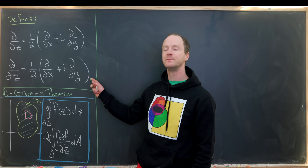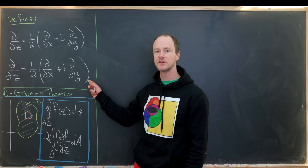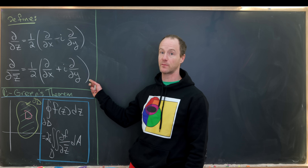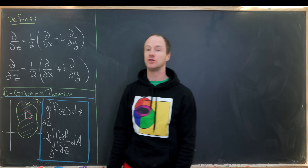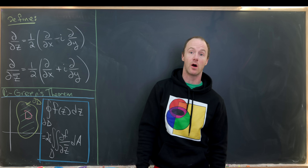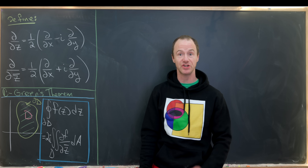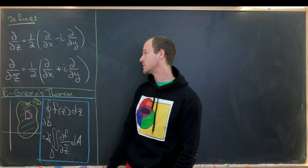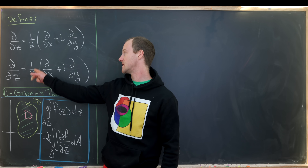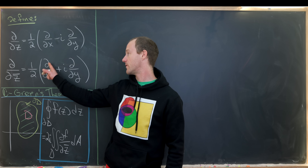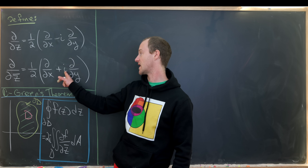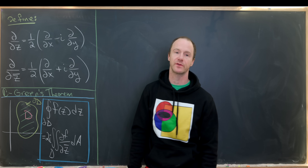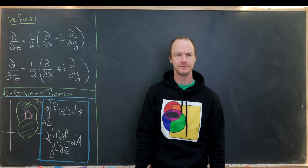We also have another partial derivative, now with respect to z̄ — the conjugate of z — which is defined to be one half the partial with respect to x plus i times the partial with respect to y.